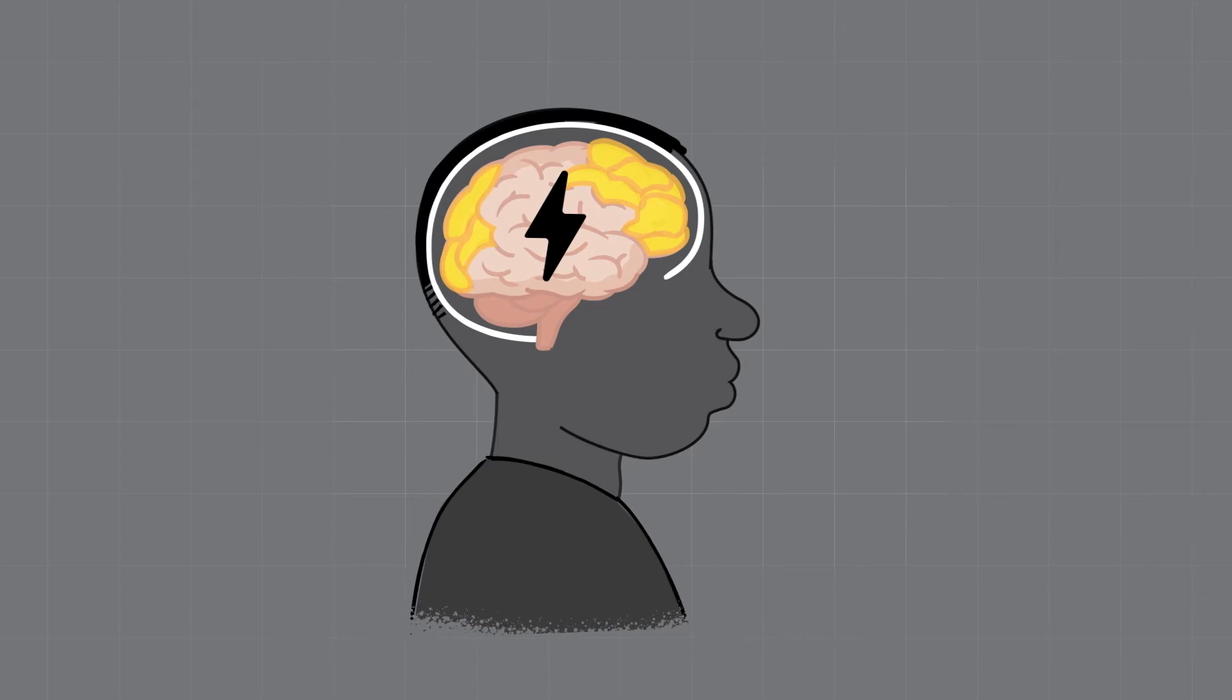The outline of a young man appears on screen, revealing an illustration of his brain. The head shakes back and forth, and the brain rattles inside the skull. A black lightning bolt appears on the brain. The front and the back of the brain flash and light up yellow.